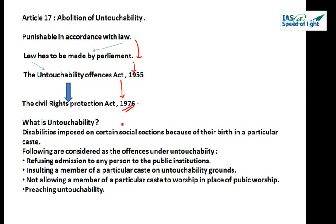Untouchability is not merely the practice of untouchability but the disabilities imposed on certain social sections because of their birth in a particular caste. The following are considered examples of offenses under untouchability: refusing admission to any person in public institutions, insulting a member of a particular caste on untouchability grounds, not allowing a member to worship in a place of public worship, and preaching untouchability directly or indirectly.